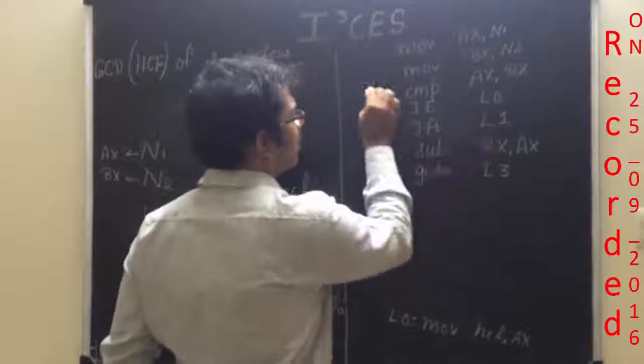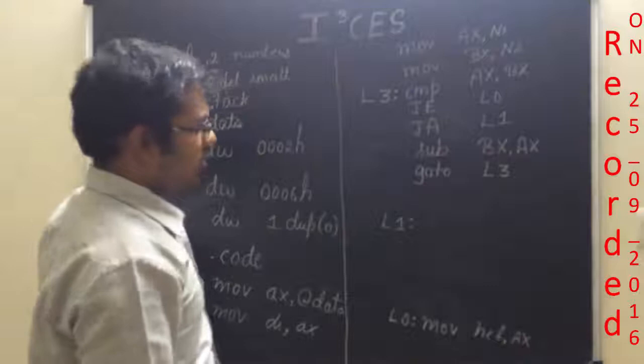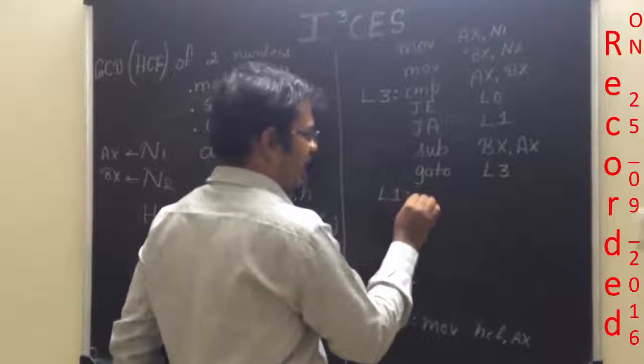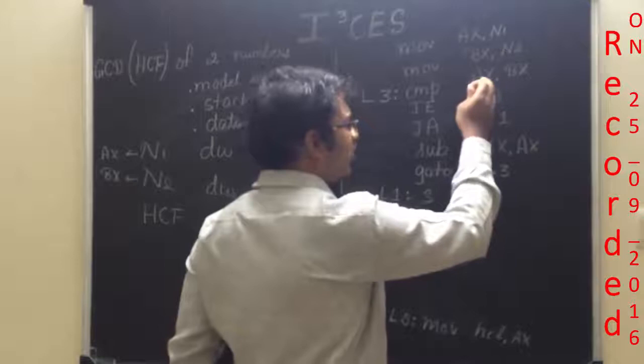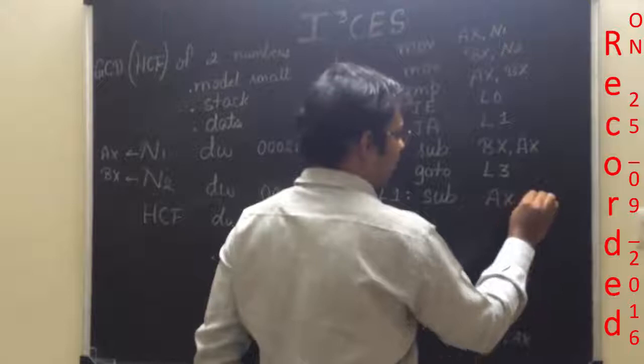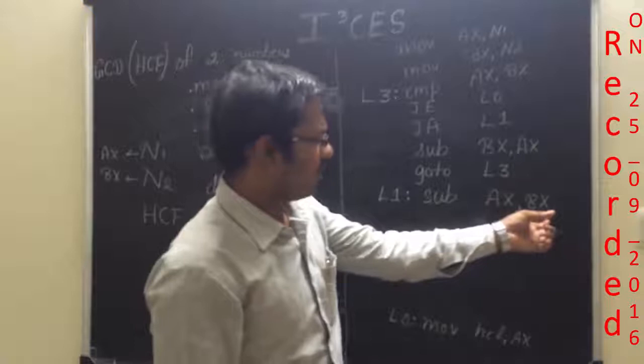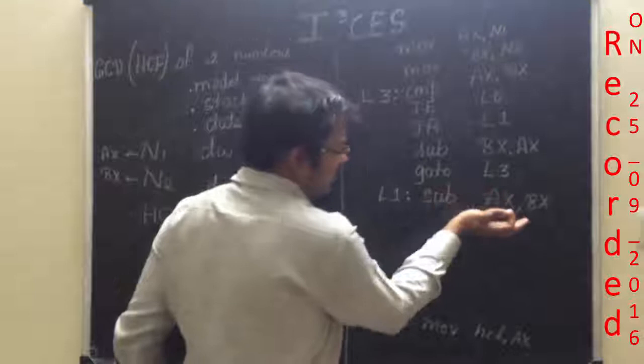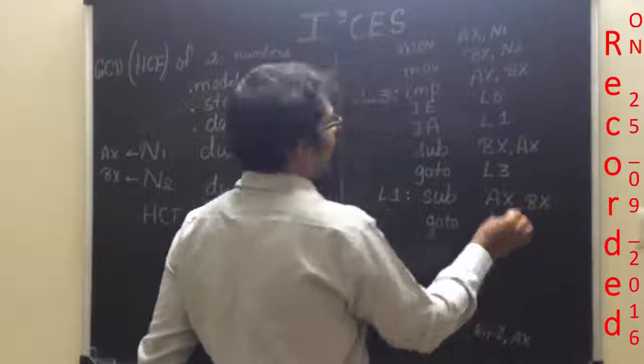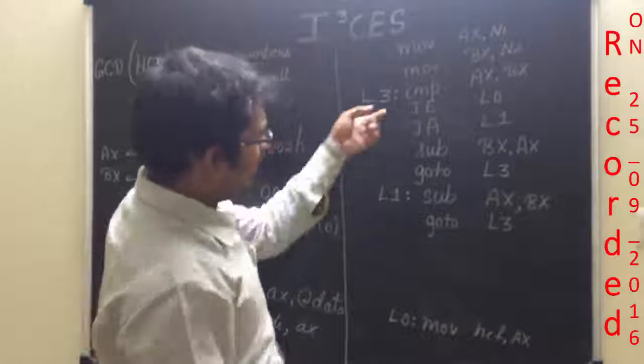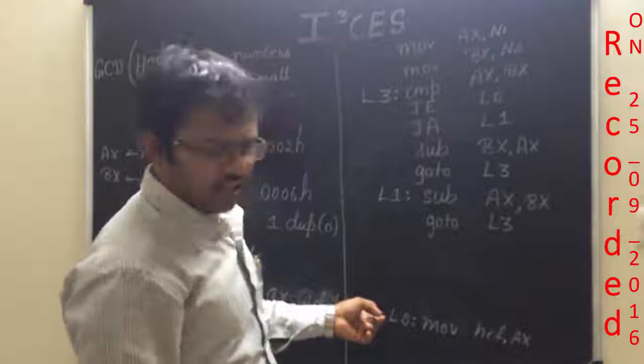Once you have performed subtraction, you check again: is AX equals to BX or not? In label L1, if it is above — meaning AX is greater than BX — you perform sub AX comma BX, and the value is assigned to AX. Once that is performed, you go to label L3 again. It will jump back to check the condition of whether AX equals BX. If equal, it comes to the jump-if-equal instruction and goes to the label where move HCF comma AX is written.